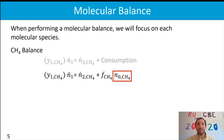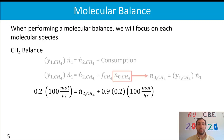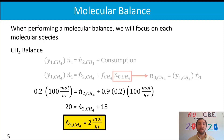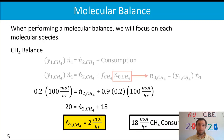That initial molar amount equals the mole fraction of methane in stream one times the molar flow rate of stream one. Substituting in all known variables, we get: 20 equals the molar flow rate of methane in stream two plus 18. After rearranging, the amount of methane flowing out in stream two is 2 moles per hour. As a complement, we have consumed 18 moles per hour of methane, which we may need later.